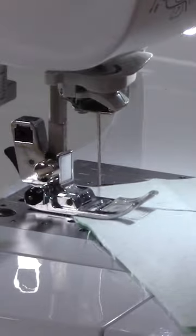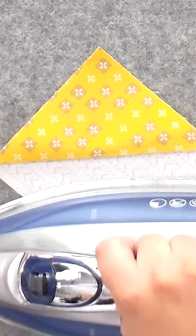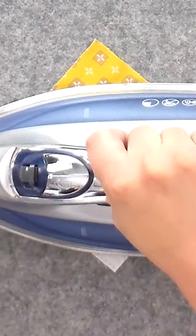Sew a scant quarter inch seam down both sides of the drawn line. Cut apart on the drawn lines to reveal half square triangles. Press the seams to the dark side but do not trim.